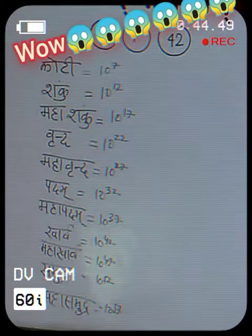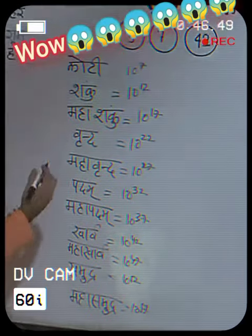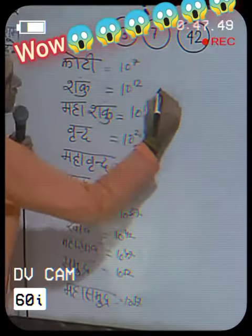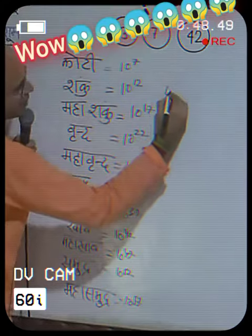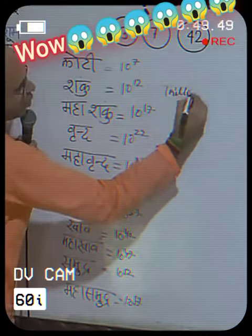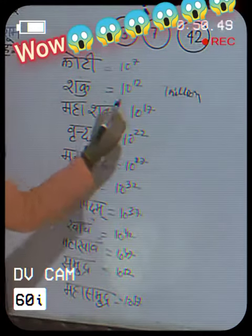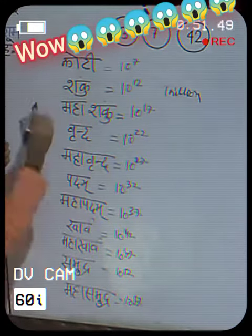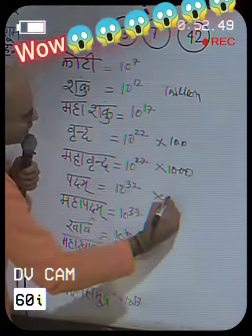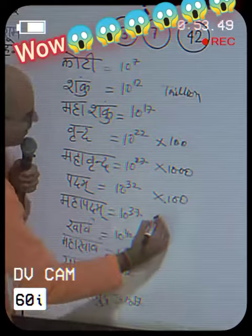This is the calculation. How many of you were able to do this? These were trillion. So trillion, Shanku, Padma, Maha Padma.